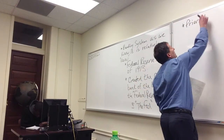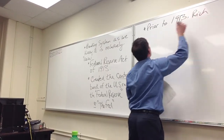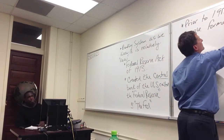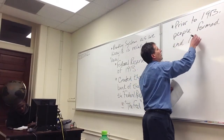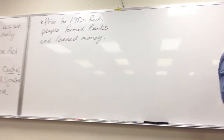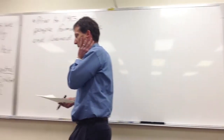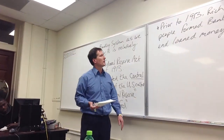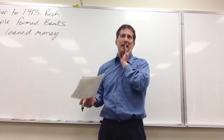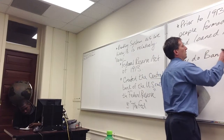Prior to 1913, rich people formed banks and loaned money — not so dissimilar from what's going on today in some ways. But those systems tended to fail. To see why they failed, we need to think about how banks make money.